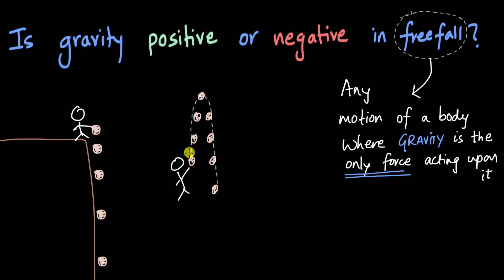One might think, looking at this motion closely, that when the ball is going up its speed is decreasing, and after the ball crosses the highest point the speed increases. So one might think the acceleration due to gravity might be negative in the beginning and positive after the highest point. But that is actually not true — that is wrong.